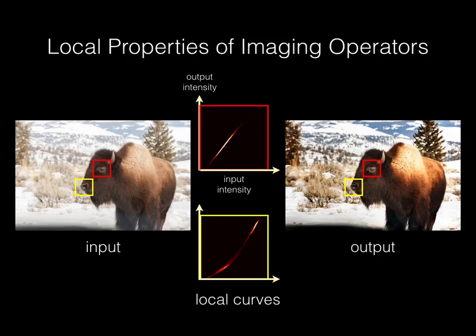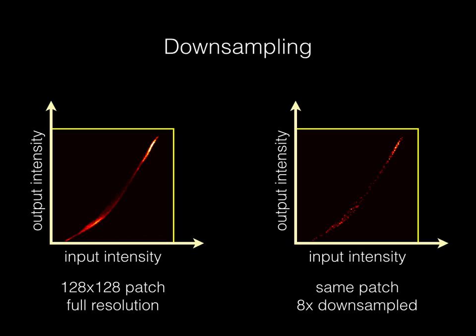Let's focus on the yellow patch and look at what happens when you downsample the image. On the left is the same plot at full resolution, and on the right is a plot for the corresponding patch after 8x downsampling with a box filter. The overall shape is the same, but with fewer samples.